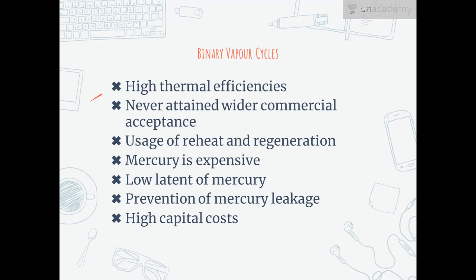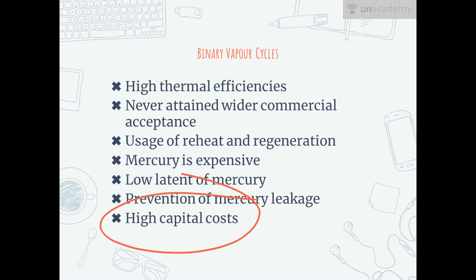These binary vapor cycles give high thermal efficiency, but they had never attained wide commercial acceptance because there has always been the possibility of improving steam cycles by increasing pressure and temperature and by using reheat and regeneration. These are not used because mercury is expensive, limited in supply, and highly toxic. And because of the low latent heat of mercury, high mercury flow rates are needed and special precautions are necessary to prevent leakage of mercury, which results in high capital costs.